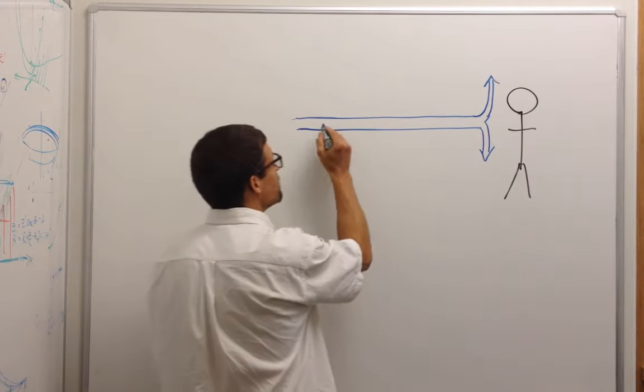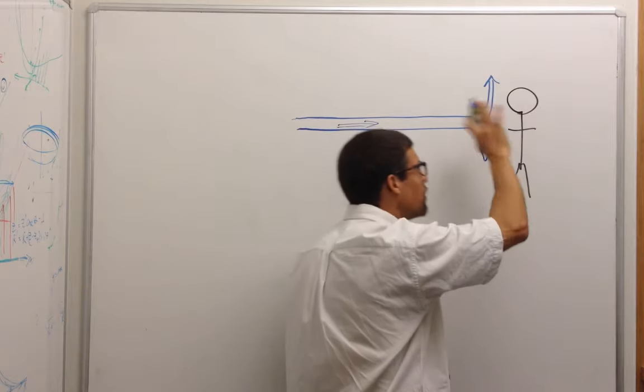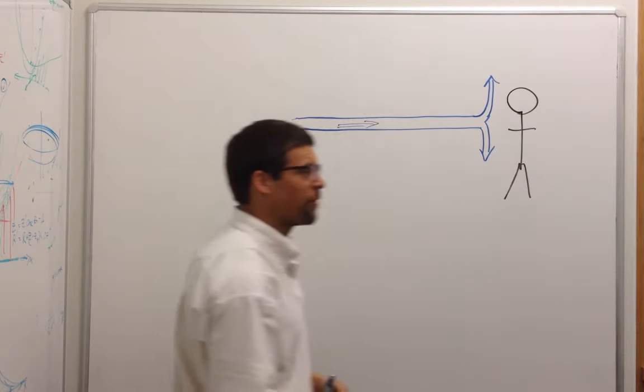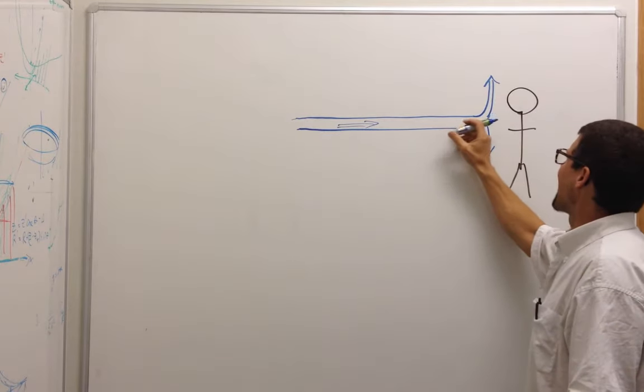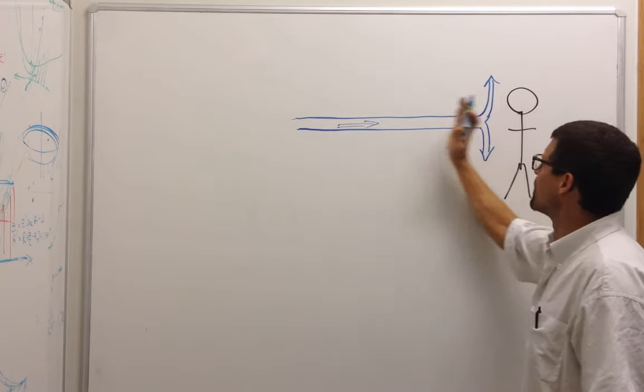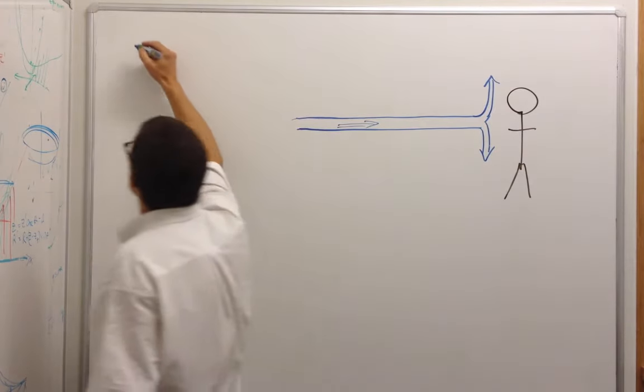So I have some water flowing in this direction very fast. It hits this person. We know it knocks them over. There's a force there. Where does that force come from? We can look at Newton's third law. The force of this water acting on the person, pushing them, must be equal to the force of the person pushing on the water in the opposite direction. So we make use of this.